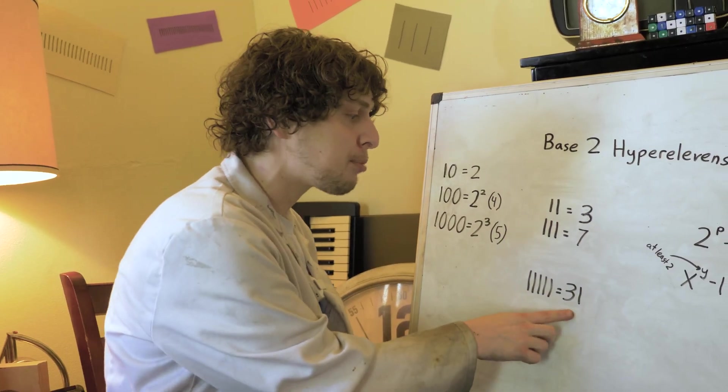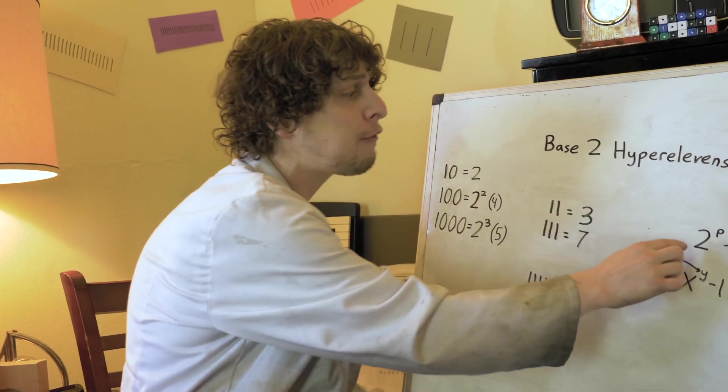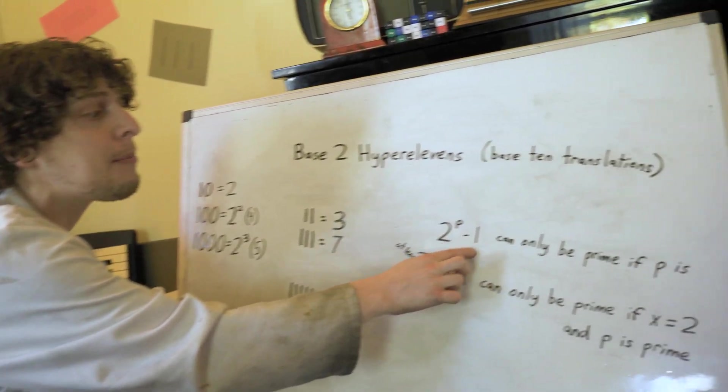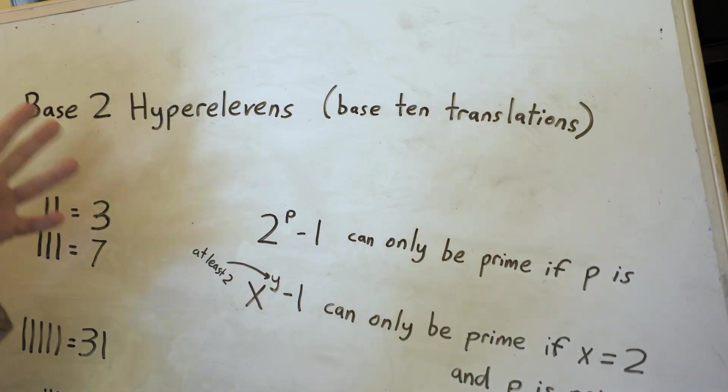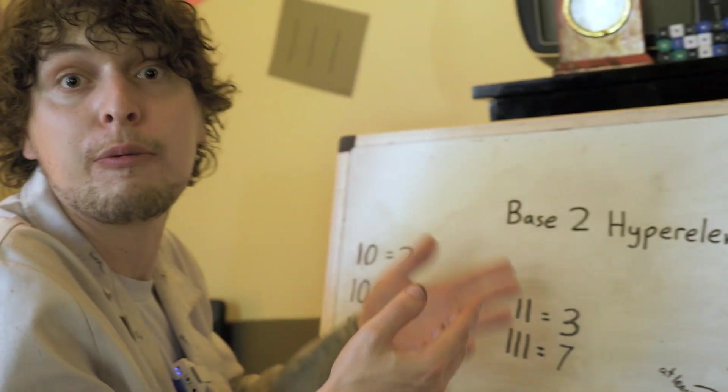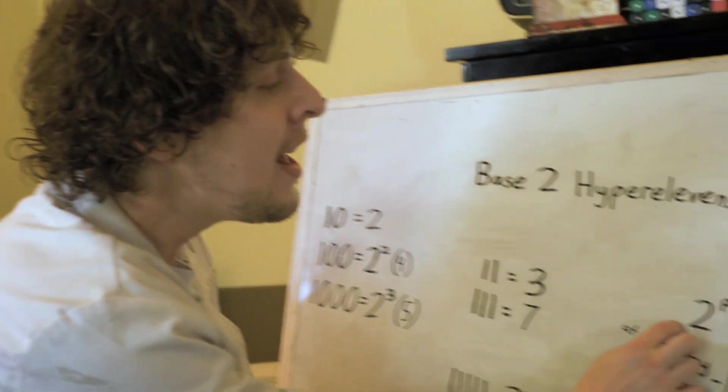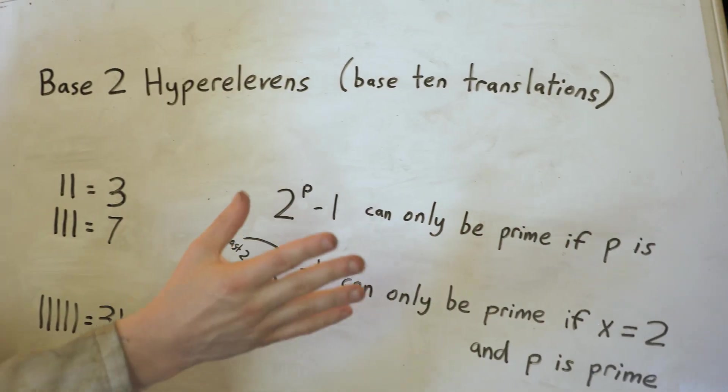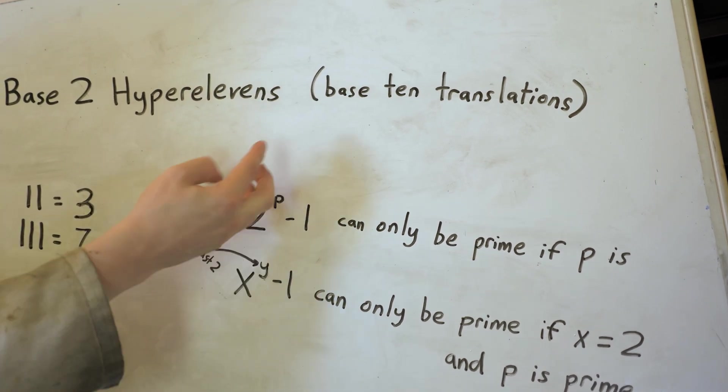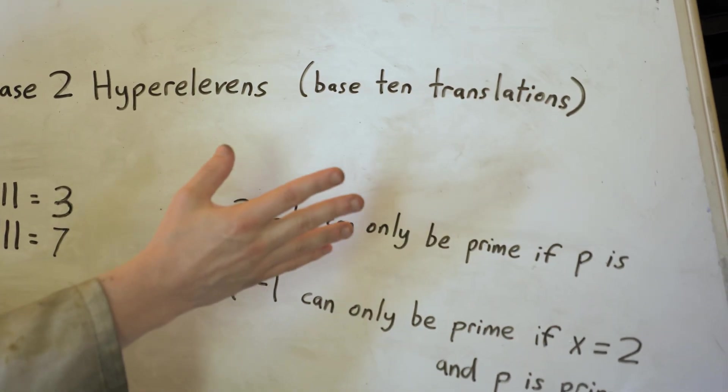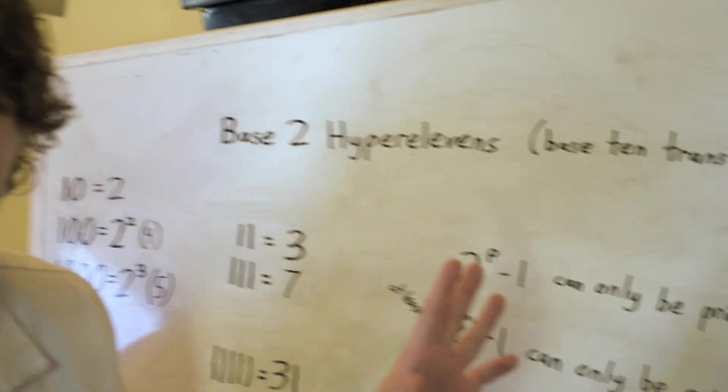So if we're hunting for mersenne primes, their simplified form is 2 to some power minus 1. And this is actually what that generalized rep unit equation would simplify out to if we put in 2 for the base. Now, this we've already learned could only possibly be prime if the exponent, which is the amount of ones, is also prime. But here's another crazy rule.